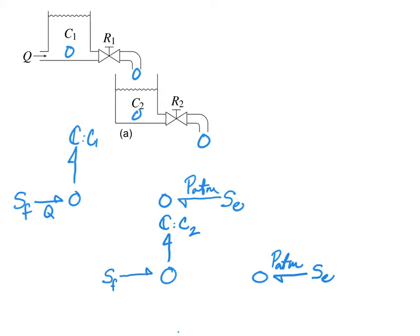Now we are going to insert R ports. Between the two pressures here and here, we have a valve R1, and between here and there we have a valve R2. We will insert a one junction between these two pressures and an R element to represent the first valve. And over here, similarly, a one junction and an R element to represent the second valve.